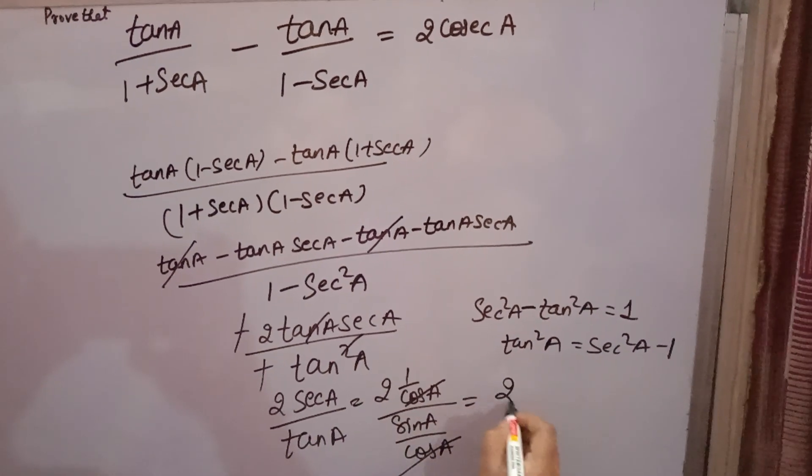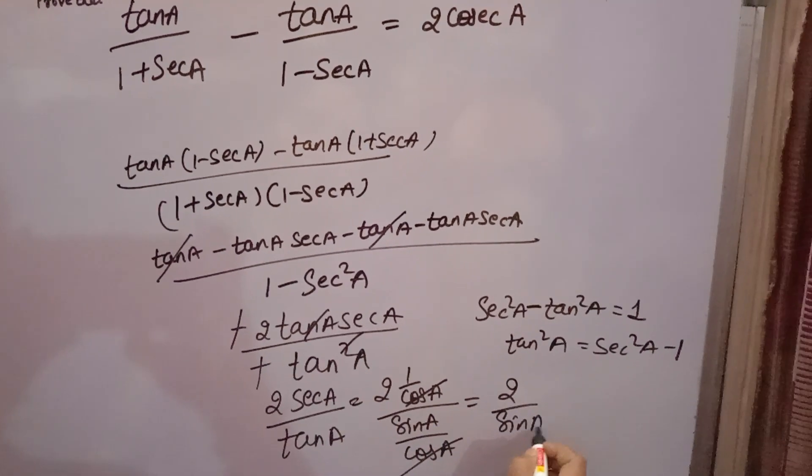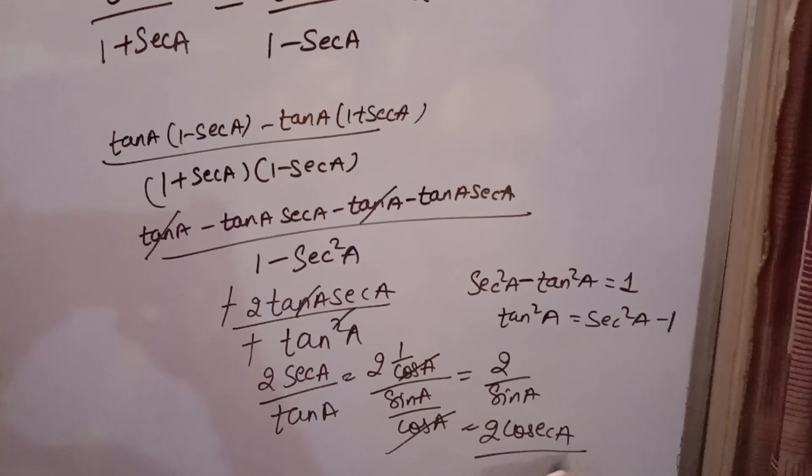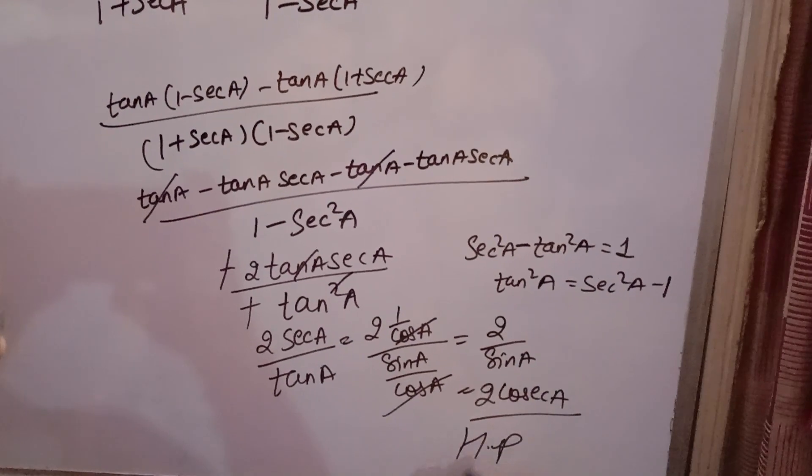Cos A cancel and you get 2 over sin A. Now 2 write as it is. 1 over sin A is cosec A. This only you have to prove. Hence, proved. Thank you.